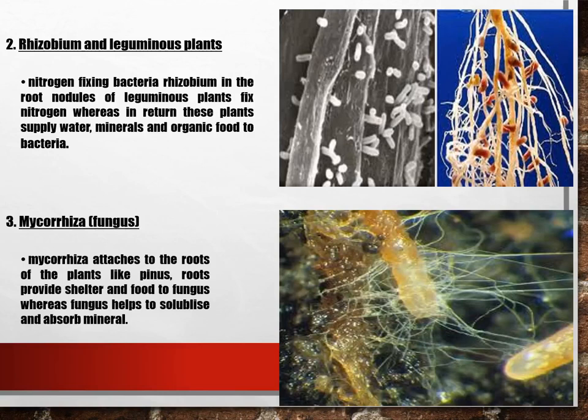Another example of mutualism is mycorrhiza. Mycorrhiza attaches to the roots of Pinus — plants growing on hills. The mycorrhiza gets food and space, while the fungus provides minerals to the plant in soluble form, because in the harsh environment the minerals are provided to the plant by the mycorrhiza.